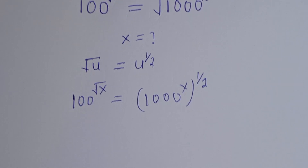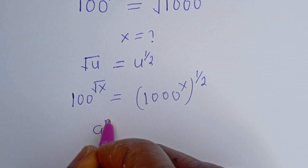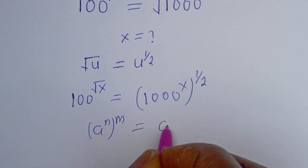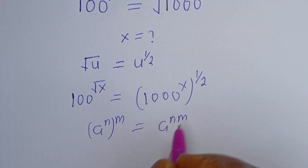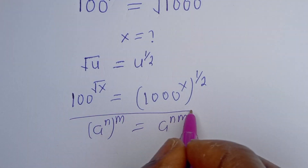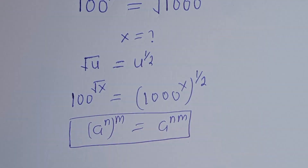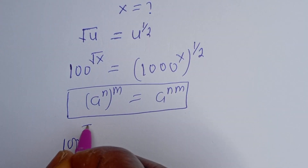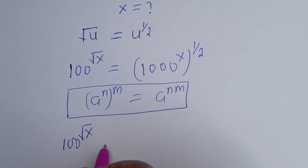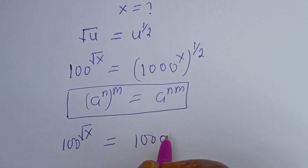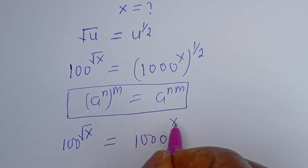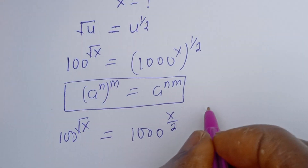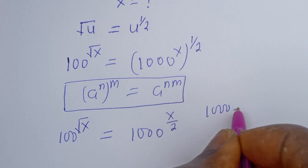Then, if you have a to the power of n to the power of m, this is equal to a to the power of n times m. So here we have 100 to the power of square root of s is equal to 1000 to the power of s over two.